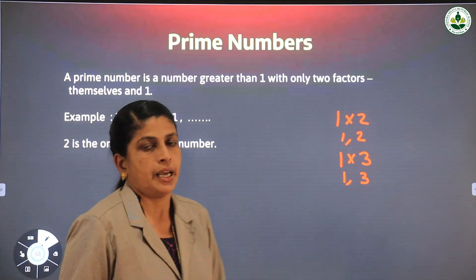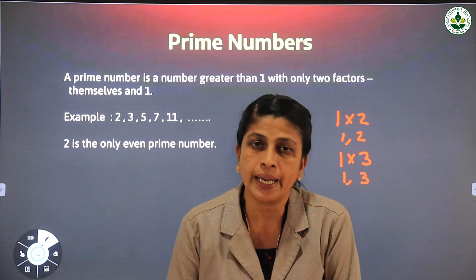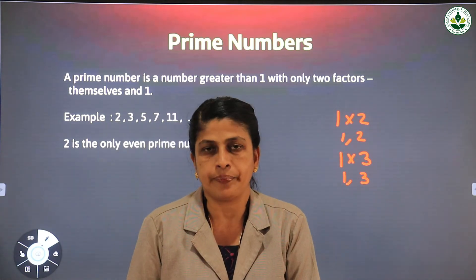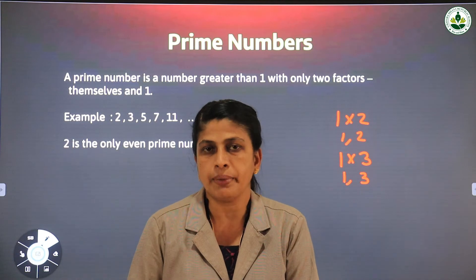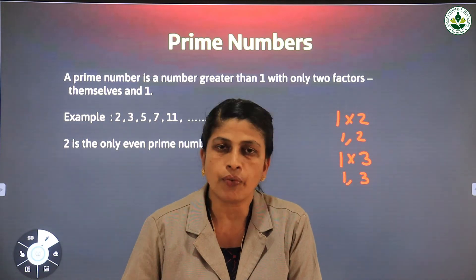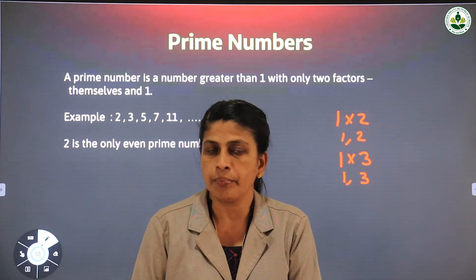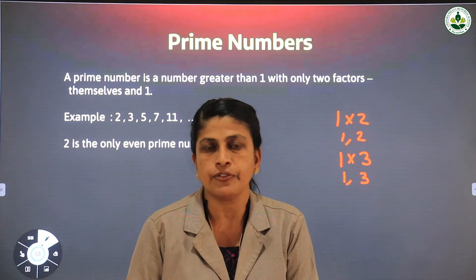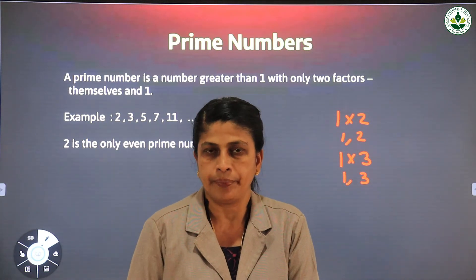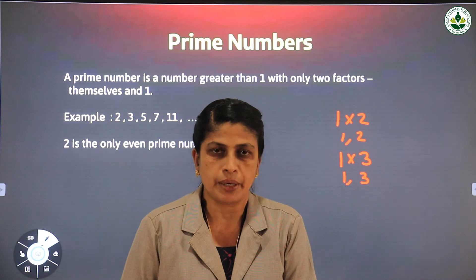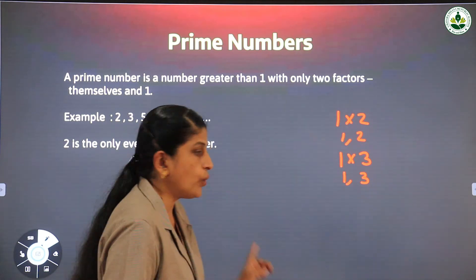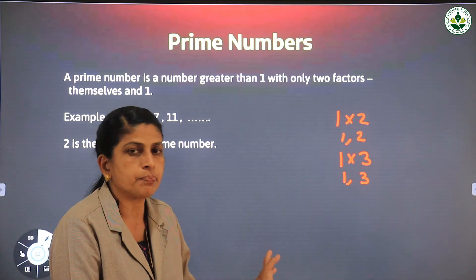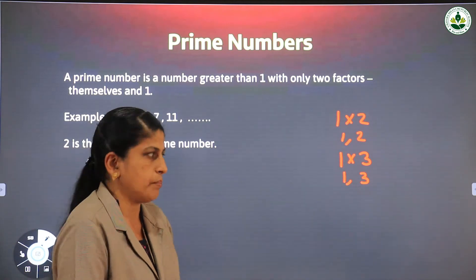To summarize: a prime number has only two factors — the number itself and 1. The number 1 is not a prime number because 1 has only one factor. And 2 is the only even prime number; all other prime numbers are odd numbers.